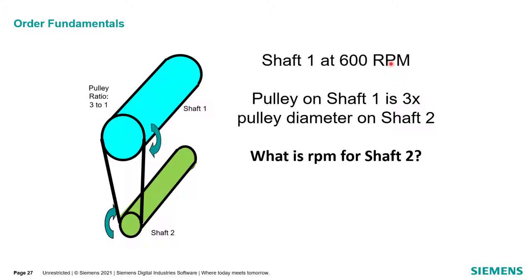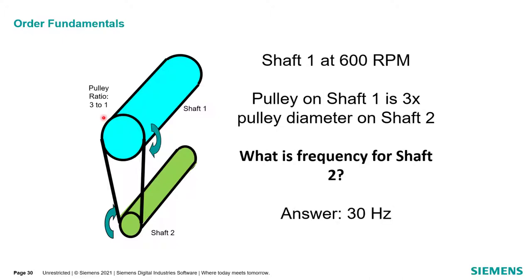Let's make our system a little more complicated and add a second shaft. If we add shaft two with a pulley ratio of three to one, and we still spin shaft one at 600 RPM, what would be the RPM for shaft two? Since the other shaft spins at three times the first, shaft two is spinning at 3 × 600 = 1,800 RPM. And the frequency for shaft two would be three times the frequency of shaft one, which is 30 hertz.